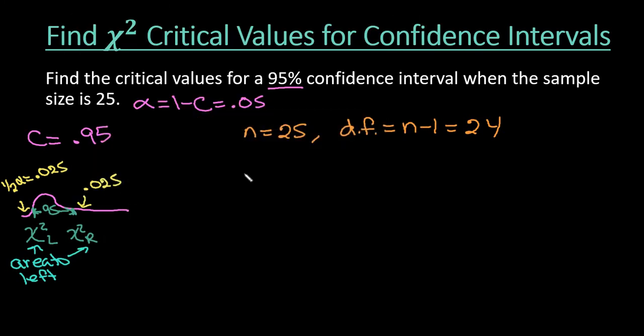So 12.401 would be our chi squared critical value to the left. So this would be our left or our lower critical value. And then I need to find my chi square to the right.